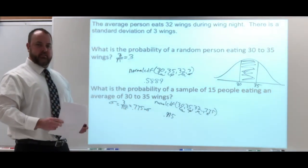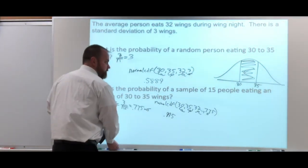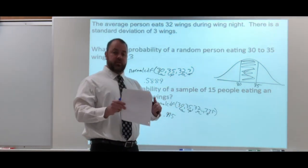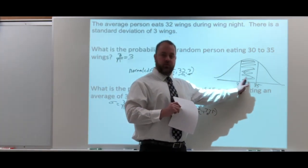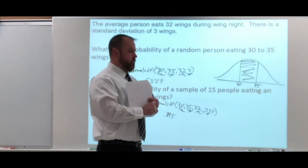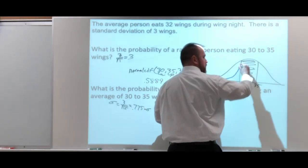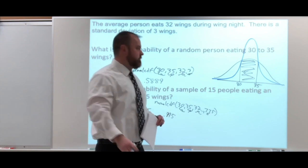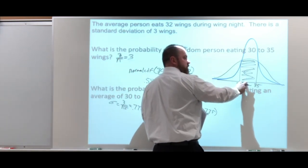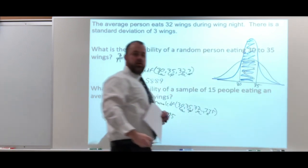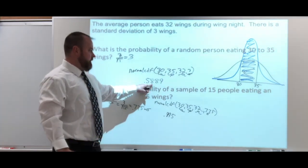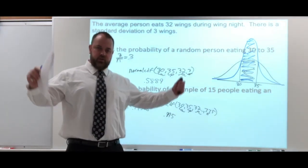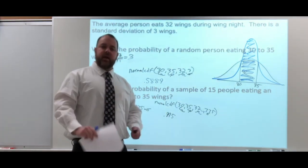We're getting close to 100% in that case. Think about what's happened to our curve — we're looking between 30 and 35, and we're shrinking our standard deviation so everything gets closer to the average. This time, compared to before, we're looking for a probability that's closer to our average. The 30 and 35 aren't moving, but now the curve is more centered around the average with a much larger shaded area. That's how we go from almost 59% to 99.5% — since we're looking for a probability closer to the average and the standard deviation got smaller, the probability went up.